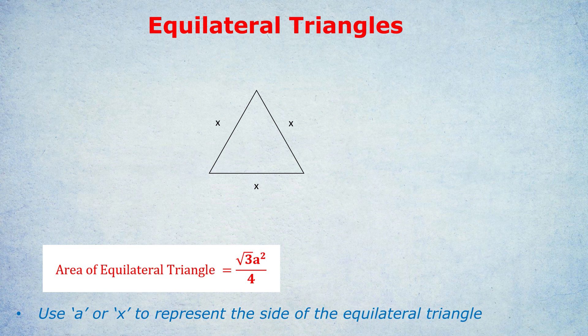But how would you derive it yourself? First thing you would do is you would drop a height down, so we have a perpendicular height of the equilateral triangle. We could label that h.